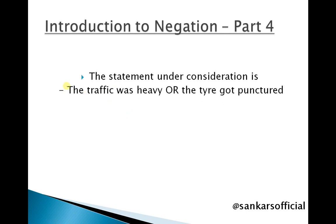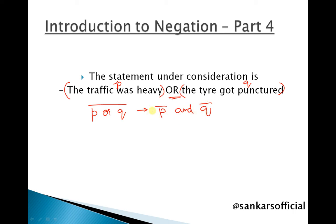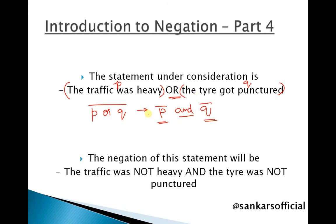Now let us consider the next statement: 'The traffic was heavy' — let that be event P — 'or the tyre got punctured' — let that be event Q. These two events are connected using the logic OR. If we write the negation of P OR Q, the whole bar, that will be P-bar AND Q-bar. The logic OR is converted to logic AND. So P-bar is 'the traffic was not heavy', Q-bar is 'the tyre was not punctured', and they are connected using AND. The negation reads as: 'The traffic was not heavy and the tyre was not punctured.' In this case also, we are using De Morgan's Law.